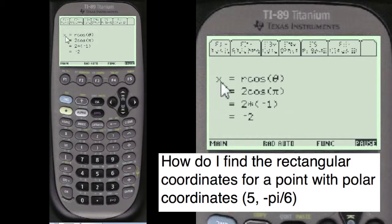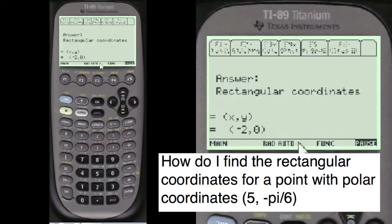So the x is equal to r cosine of theta. It's equal to 2 cosine of theta, et cetera, et cetera. And this equals to minus 2. y is equal to r times sine of theta, 2 sine of theta. And 2 times 0 is 0, so the answer is 0. So the answer is rectangular coordinates x and y minus 2, 0.